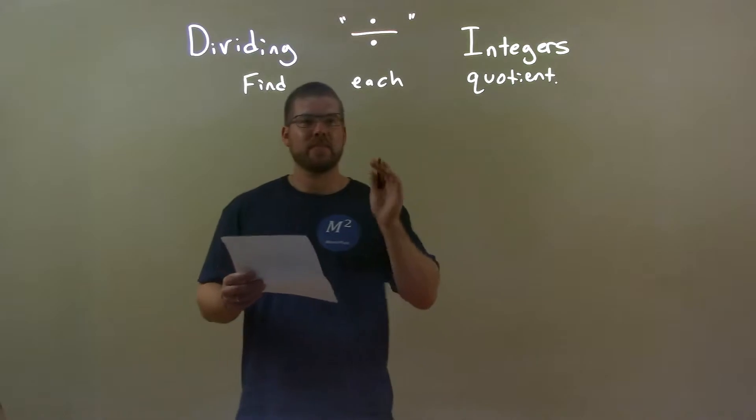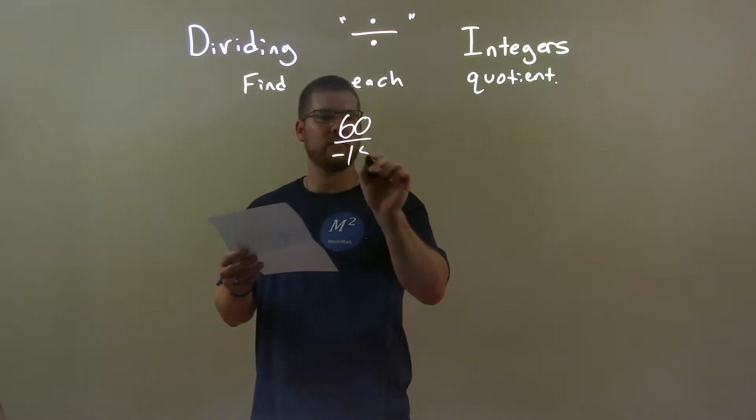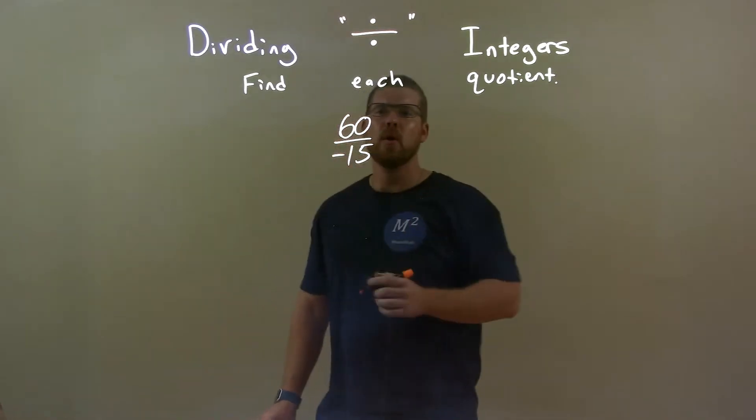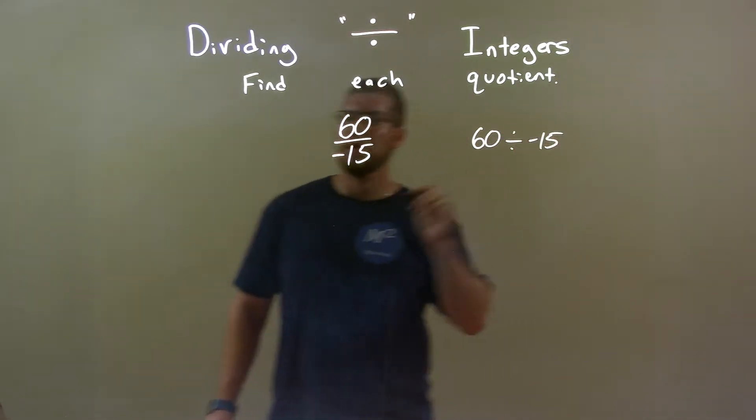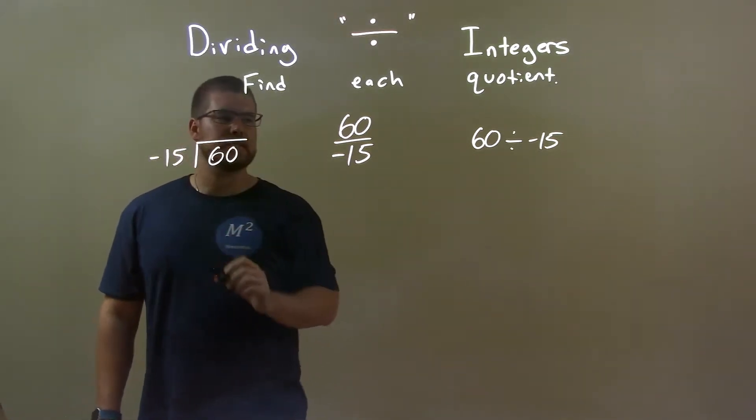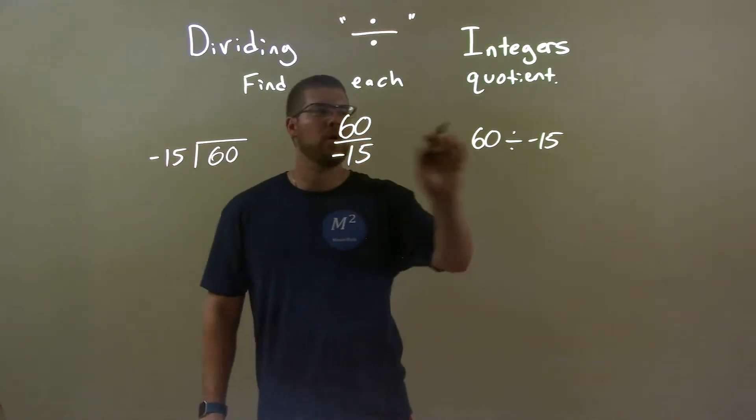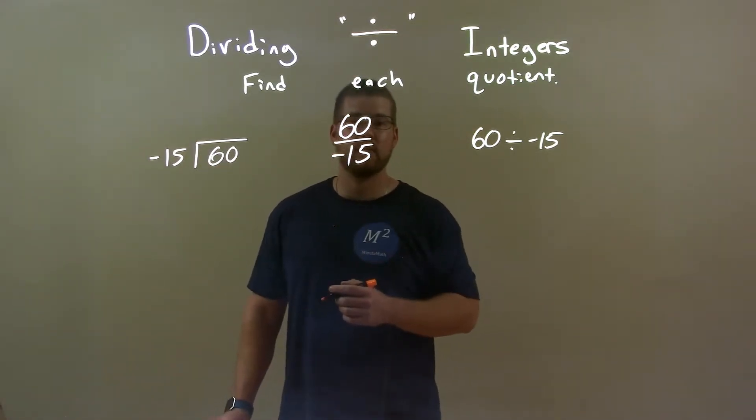So, if I was given these numbers 60 over negative 15, we know we can write this as 60 divided by negative 15 or, long division, negative 15 goes into 60. The same question is the same for all three of these, okay? What is 60 divided by negative 15?